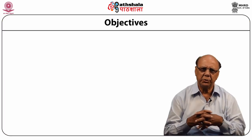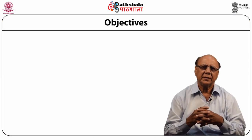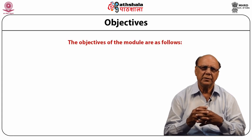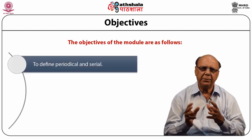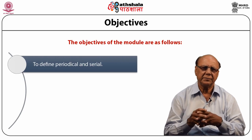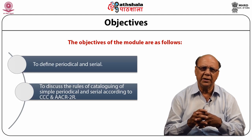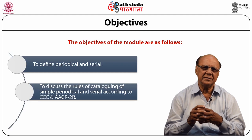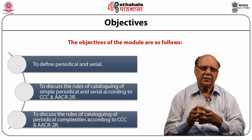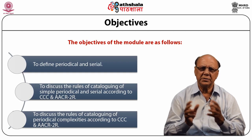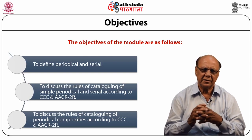Objectives of the module. The following are the objectives of this module. First, to define periodical and serial. Second, to discuss the rules of cataloging of simple periodical and serial according to CCC and AACR 2R. Third, to discuss the rules of cataloging of periodical complexities according to CCC and AACR 2R.